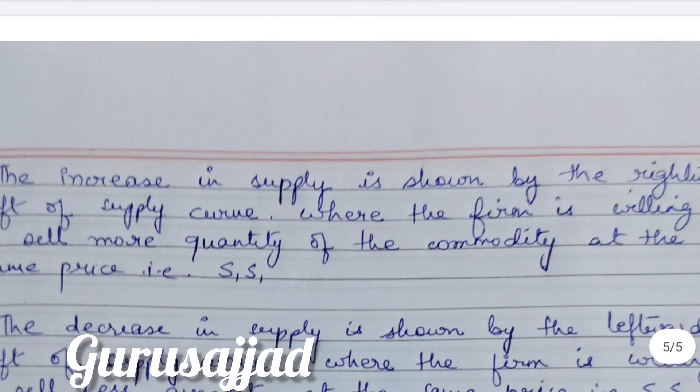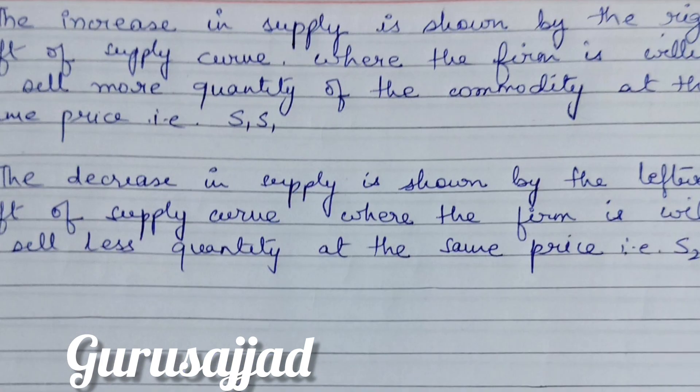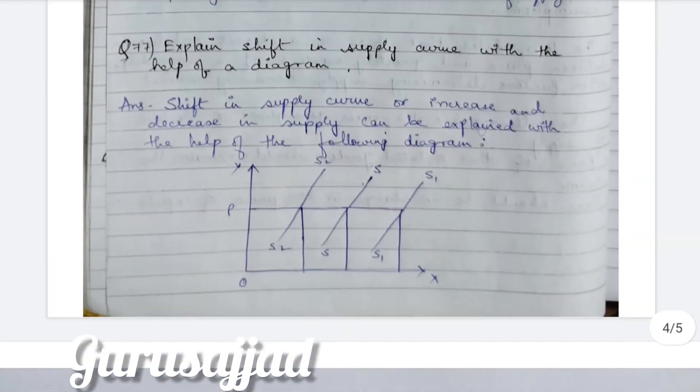The increase in supply is shown by the rightward shift of the supply curve to S1, where the firm is willing to sell more quantity of the commodity at the same price. The decrease in supply is shown by the leftward shift of the supply curve to S2, where the firm is willing to sell less quantity at the same price. When quantity goes down at the same price, we call it a decrease in supply and the supply curve shifts leftward to S2.